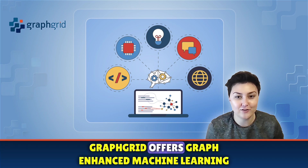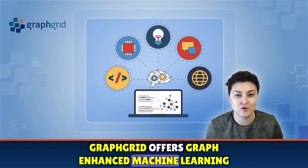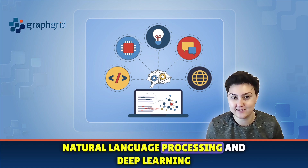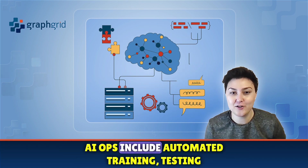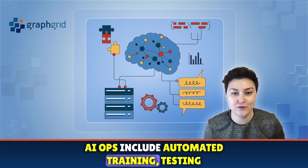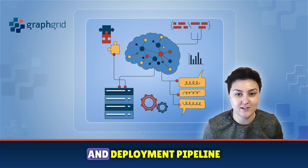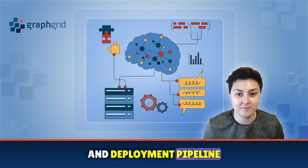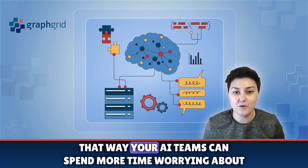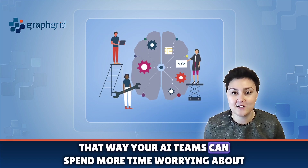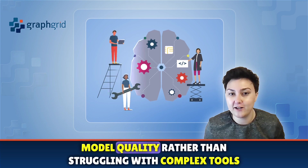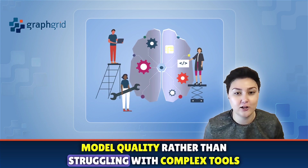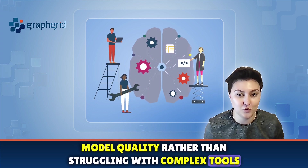GraphRid offers graph-enhanced machine learning, natural language processing, and deep learning. AIOps include an automated training, testing, and deployment pipeline. That way, your AI teams can spend more time worrying about model quality rather than struggling with complex tools.